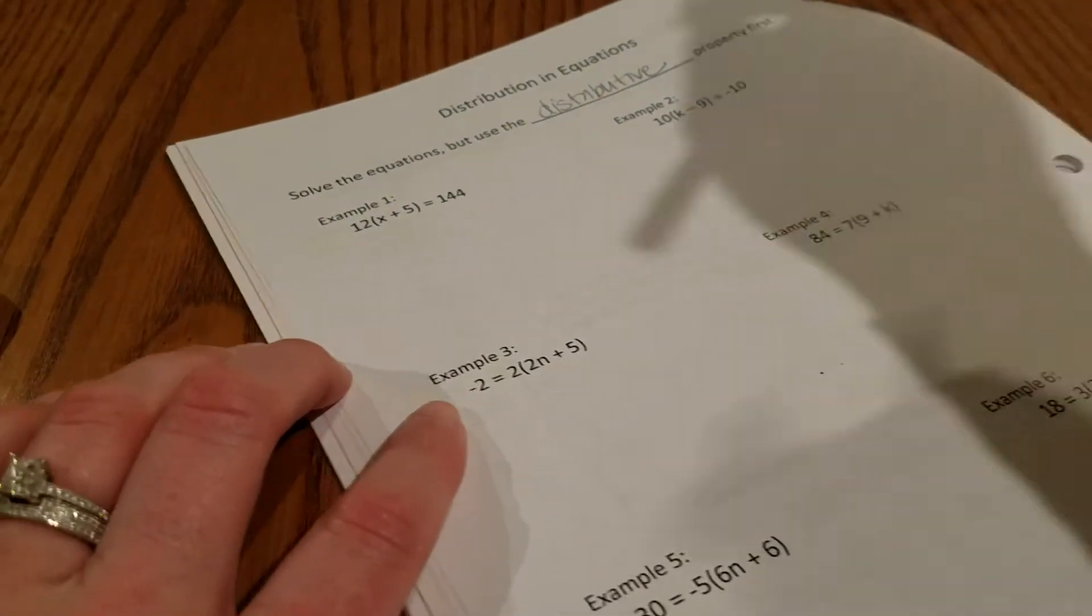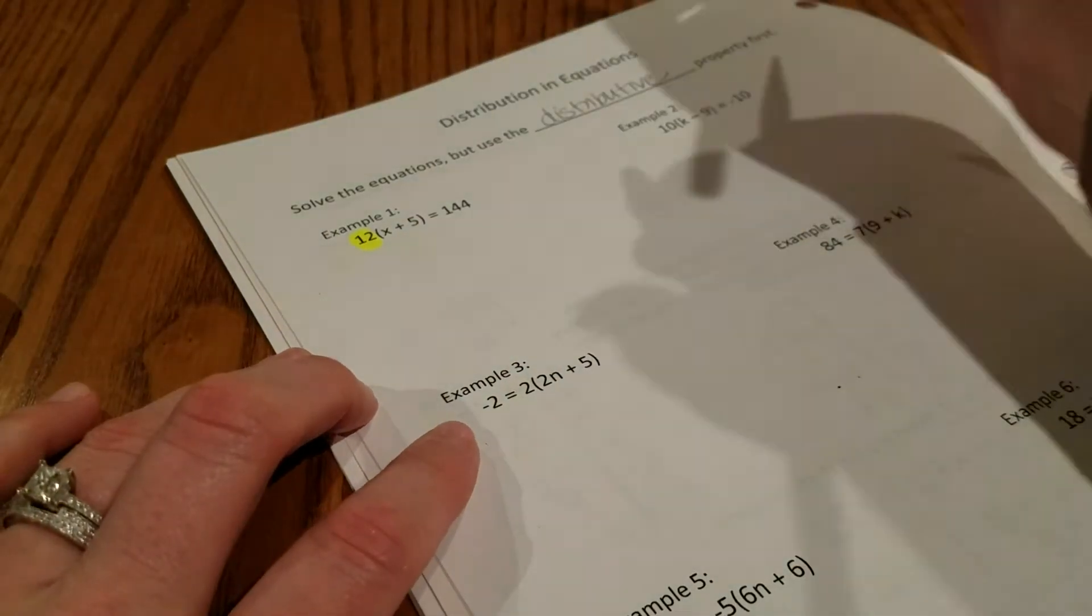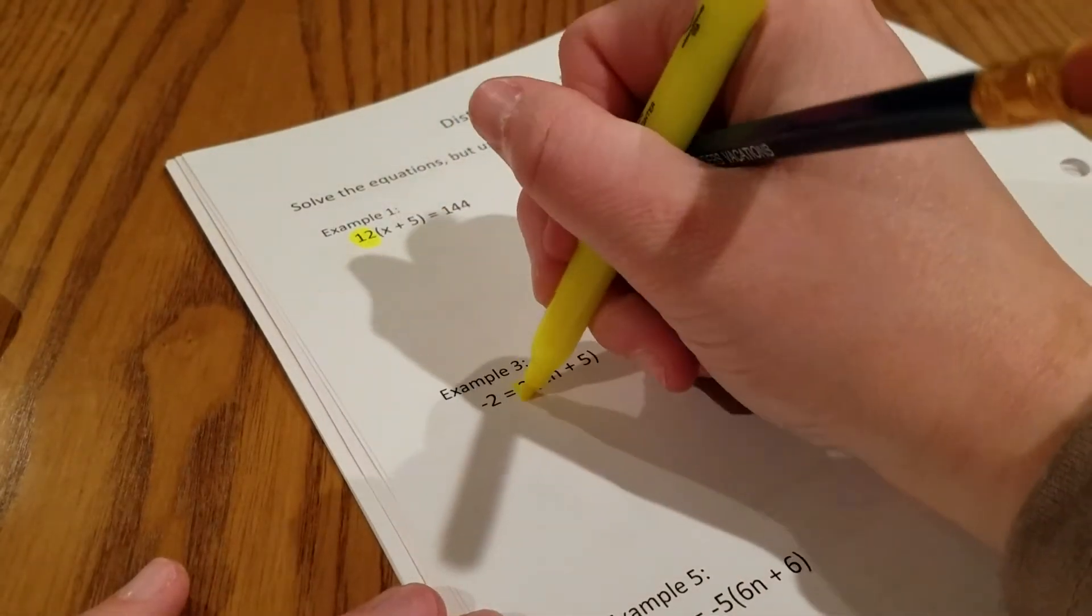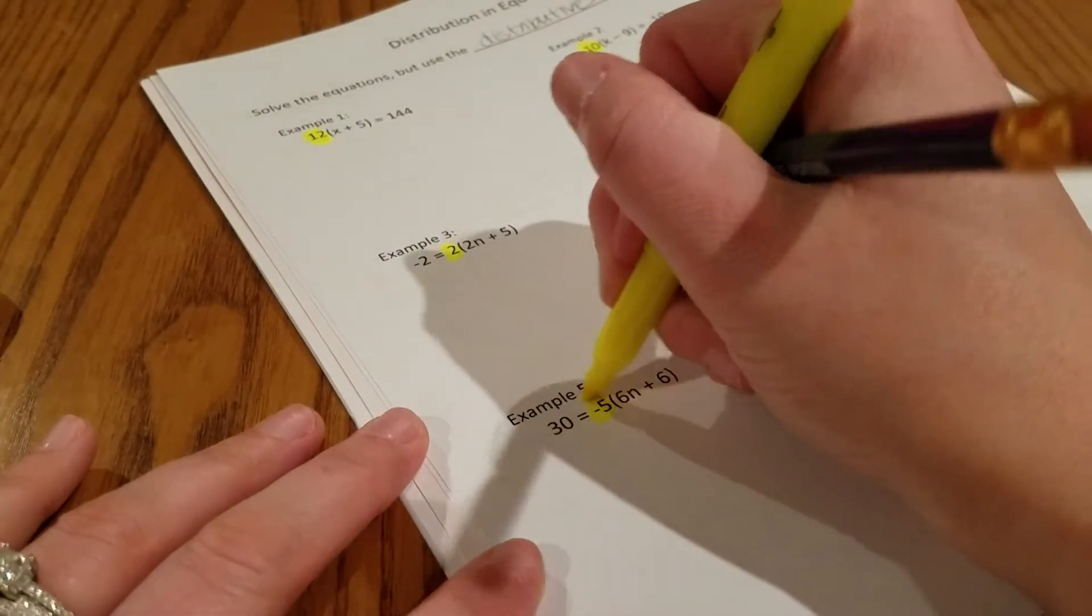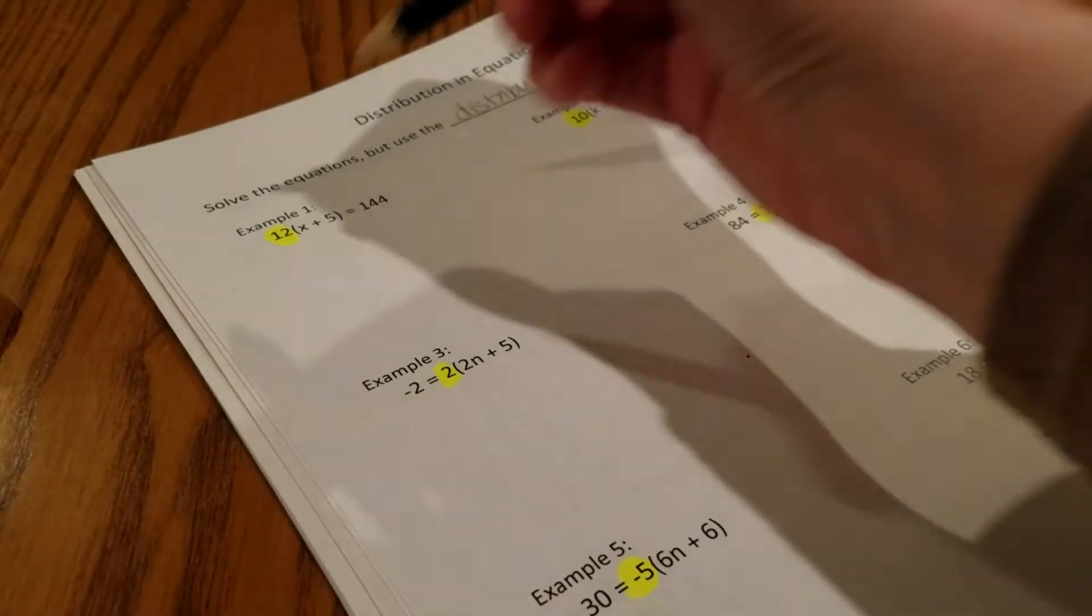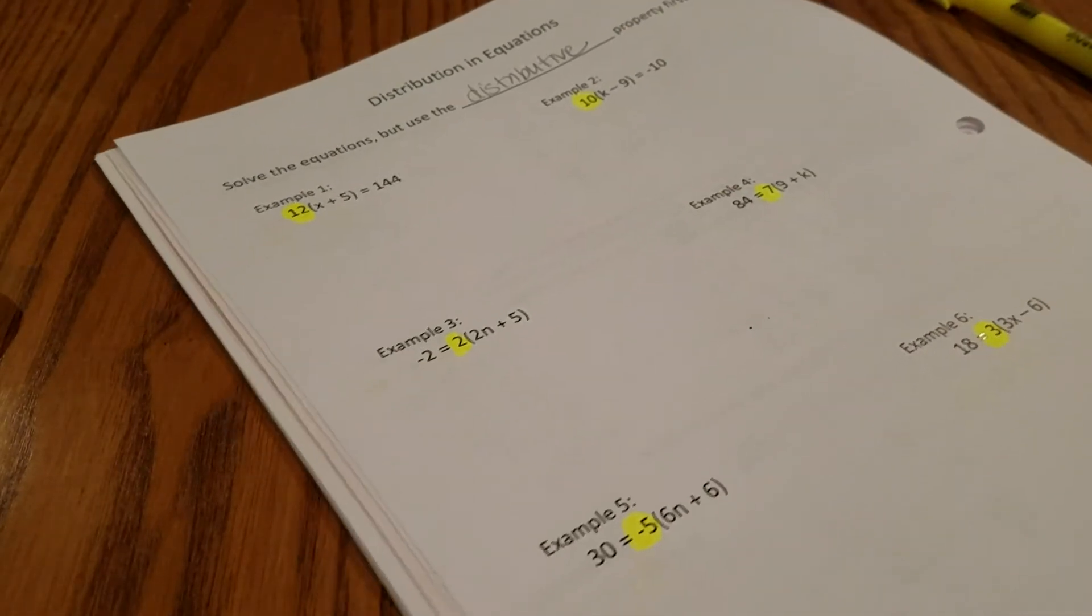I'm going to go through and highlight. In example number one, I'm going to distribute the 12, and in example two I'm distributing the 10. Down here I'm going to distribute this 2, this 7, this negative 5, and this 3. We're going to do this first column together, and then I'm going to have you do the second column for practice.